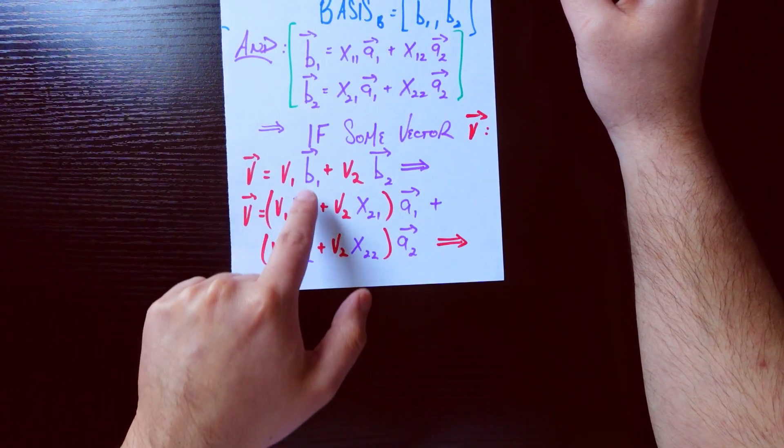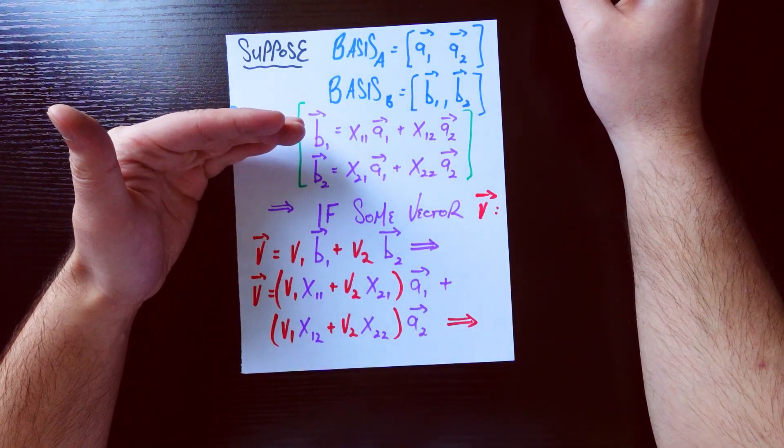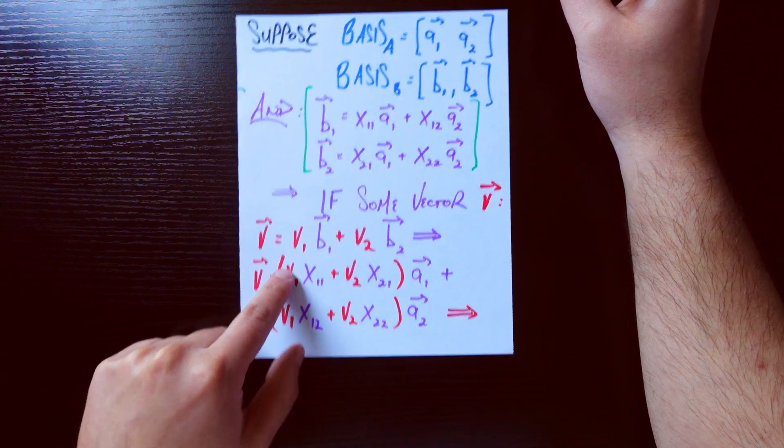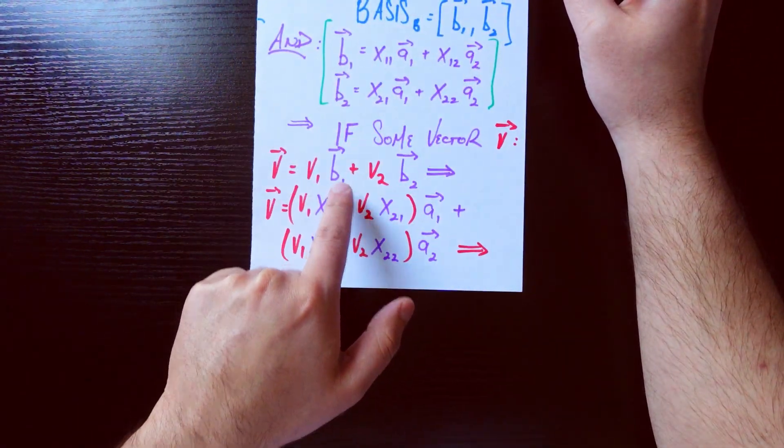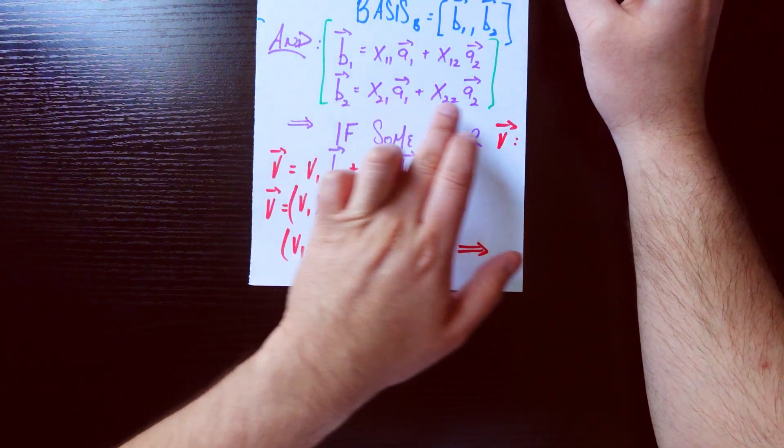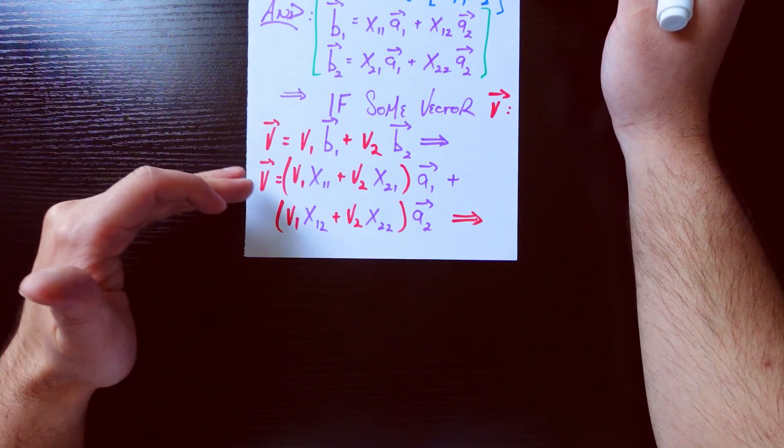But we actually know b1 and b2 in terms of a1 and a2. That's what these formulas we're talking about here. So we can go ahead and just straight up plug them in. So I go ahead and plug in this top form here for b1. And I plug in this bottom form here for b2. I rearrange just a little bit.